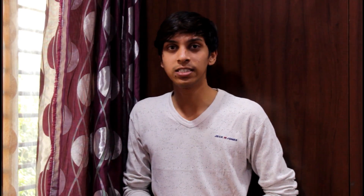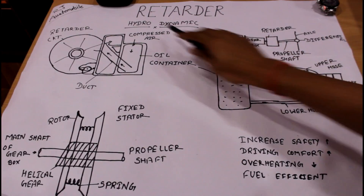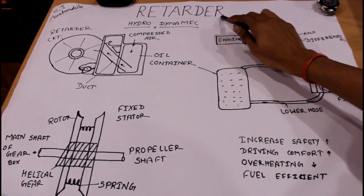A retarder is a mechanical device which is used for reducing the speed of HDVs. If you want to learn about the retarder, please sit back and keep watching our video till the very end. Our today's topic is retarder.